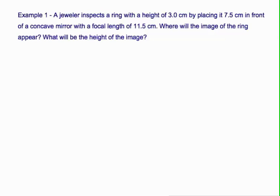A jeweler is inspecting a ring that has a height of 3 centimeters. That will be the height of our object. By placing it 7.5 centimeters in front of a mirror. The distance of our object is 7.5 centimeters.